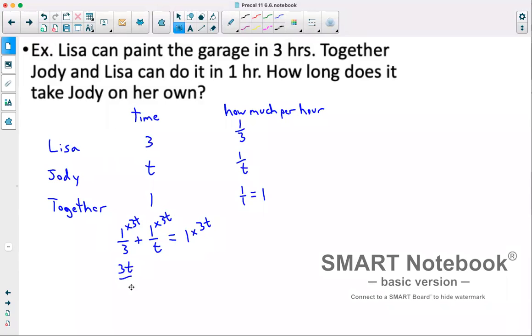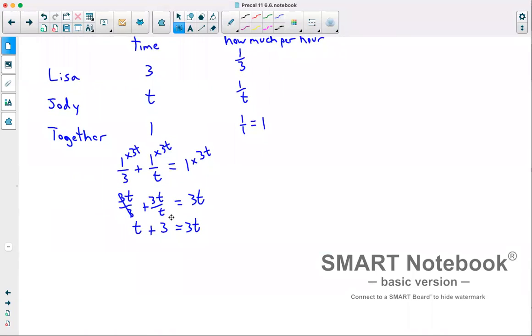That gives us 3T over 3 plus 3T over T equals 3T. The 3s will cancel out, so that gives us T plus 3 equals 3T. At this point, I would move the T to the other side. So that gives us 3 equals 2T. Divide both sides by 2. So 3 over 2, or 1.5 hours, is how long it would take Jodi.